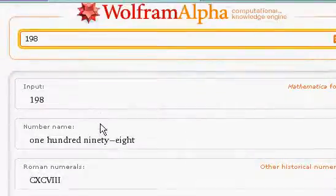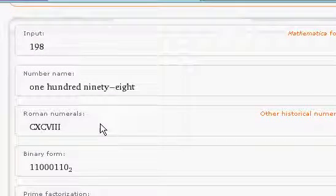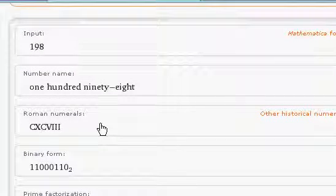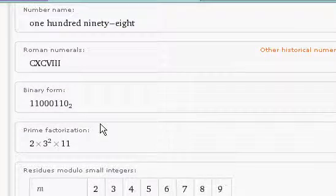That's what it looks like in Roman numerals. C, X, C, V, I, I, I. There's the binary form, and like I just mentioned, there's the prime factorization: 2 times 3 to the second times 11.